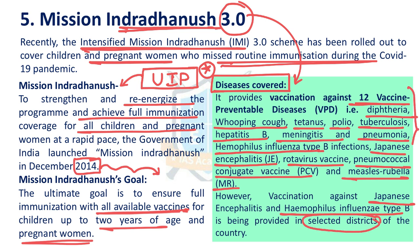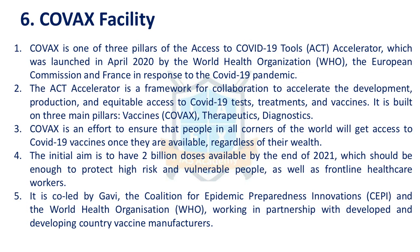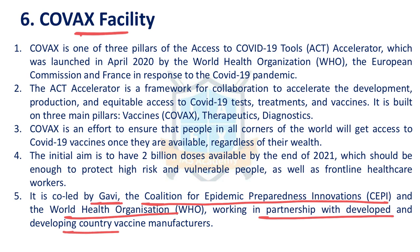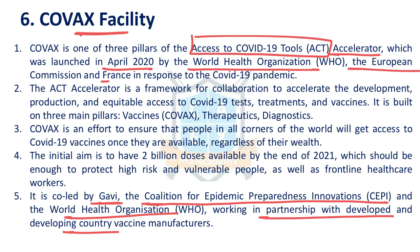The next issue is the COVAX Facility. This facility is jointly led by GAVI (Global Alliance for Vaccines and Immunization), CEPI (Coalition for Epidemic Preparedness and Innovation), and the World Health Organization. It works in partnership with developed and developing countries to promote vaccine equity. There is an initiative called the ACT Accelerator (Access to COVID-19 Tools Accelerator), launched in 2020 by WHO, the European Commission, and France in response to the COVID-19 pandemic. The ACT Accelerator has three components: vaccines (for which we have the COVAX Facility), therapeutics, and diagnostics. Under the COVAX Facility, organizations buy various vaccines from manufacturers and supply them to underdeveloped countries, especially African and other low-income countries, to promote vaccine equity.